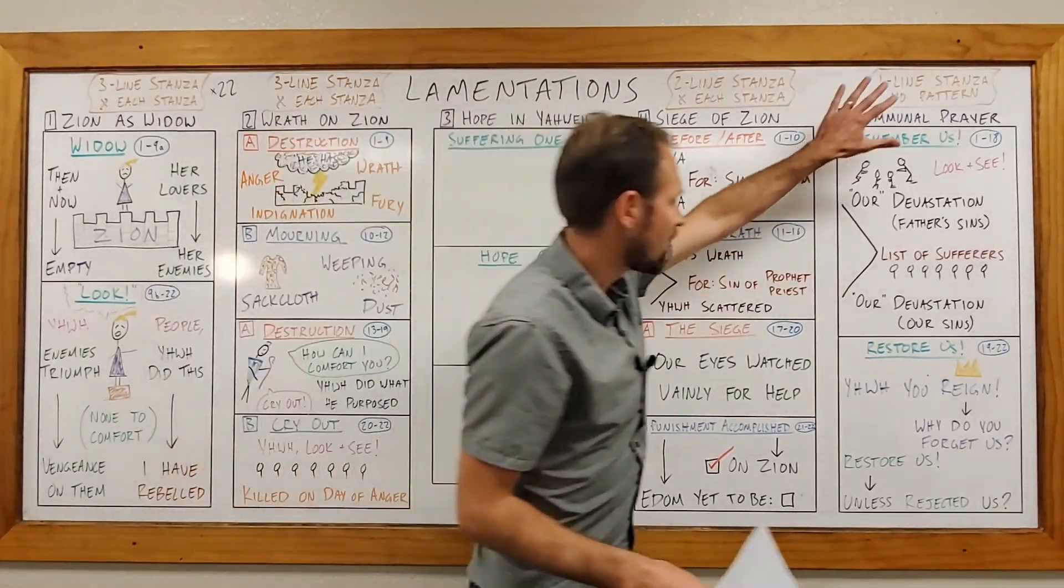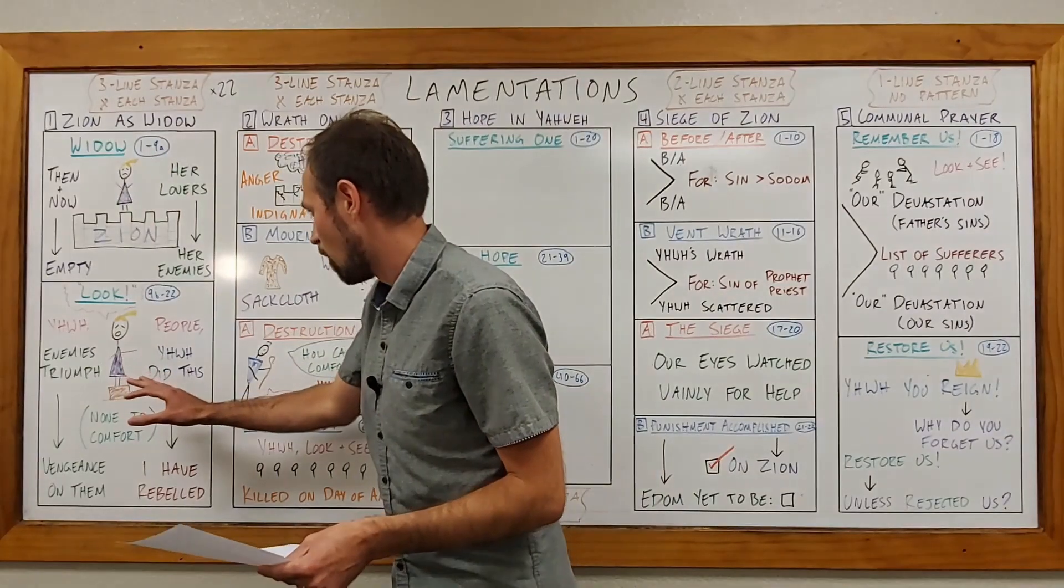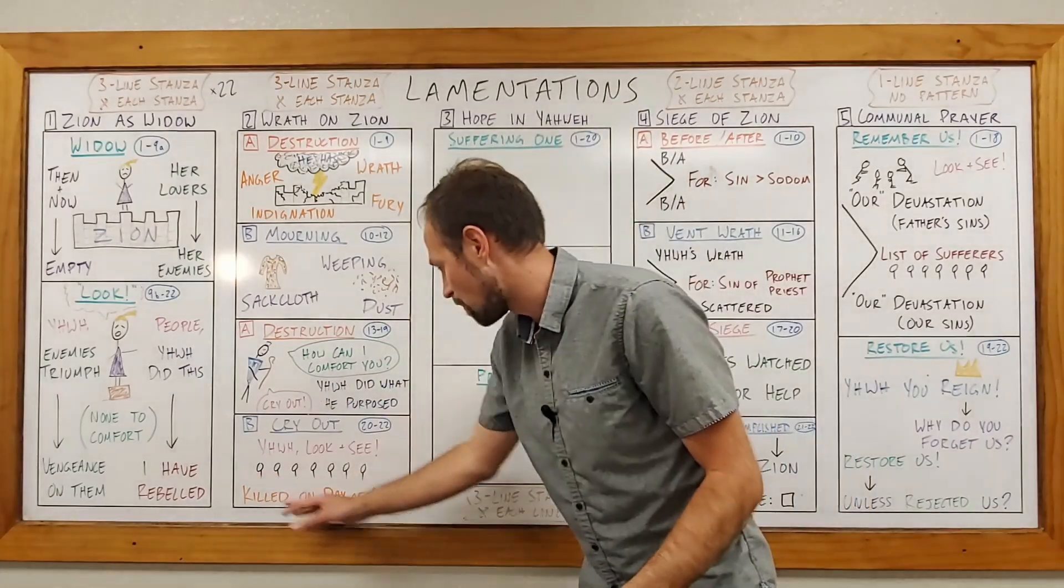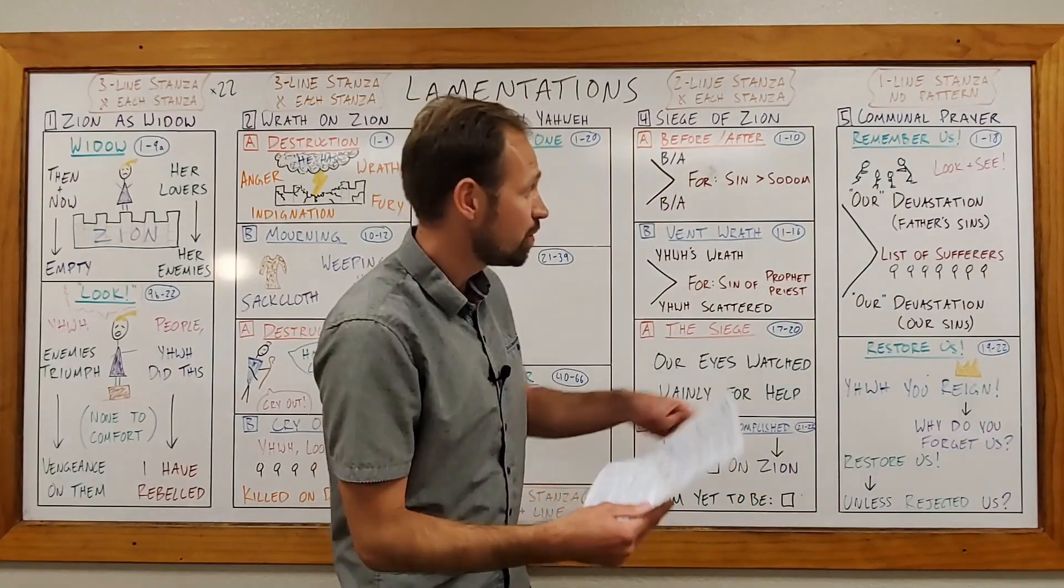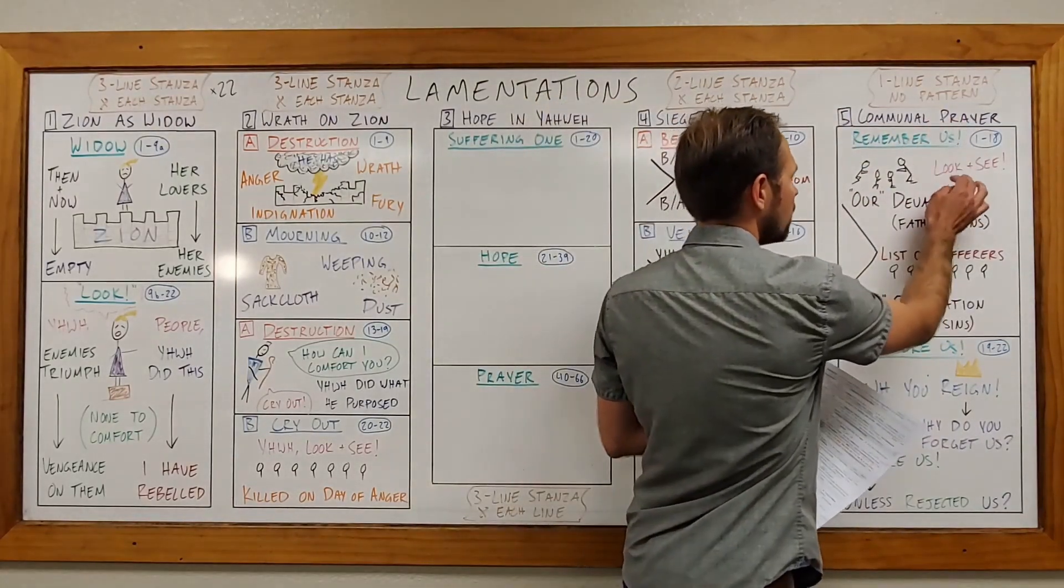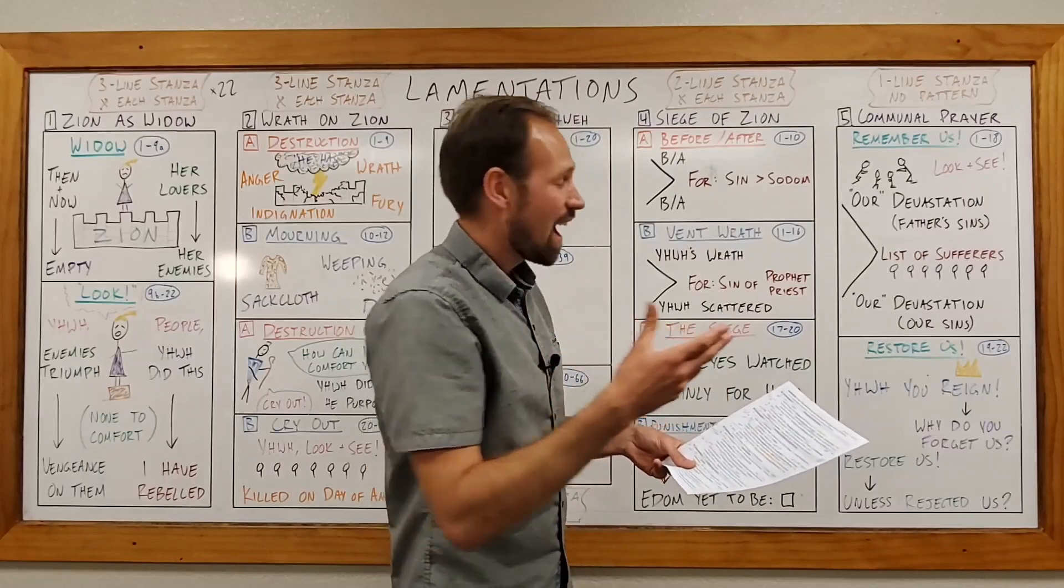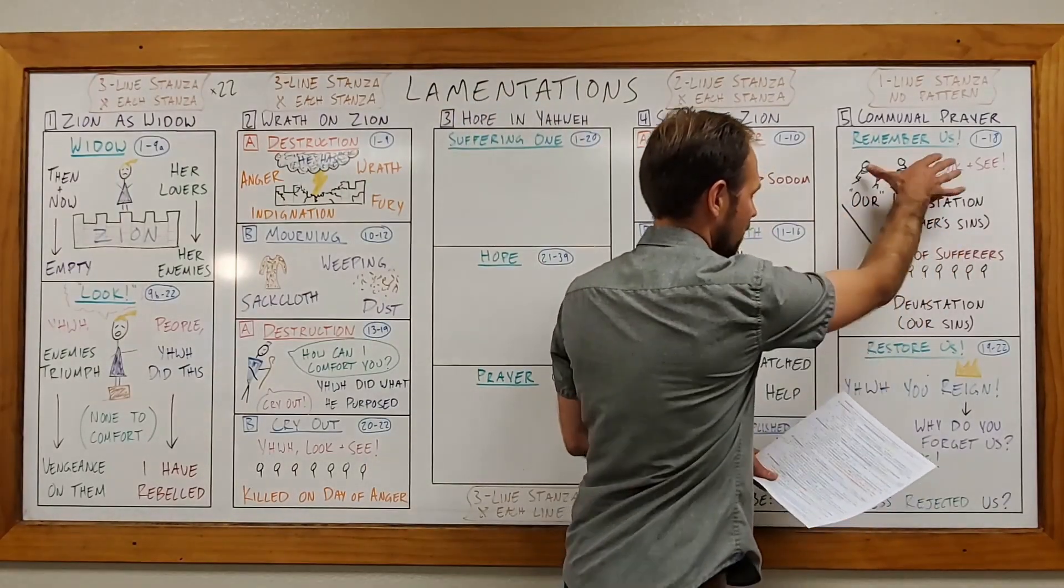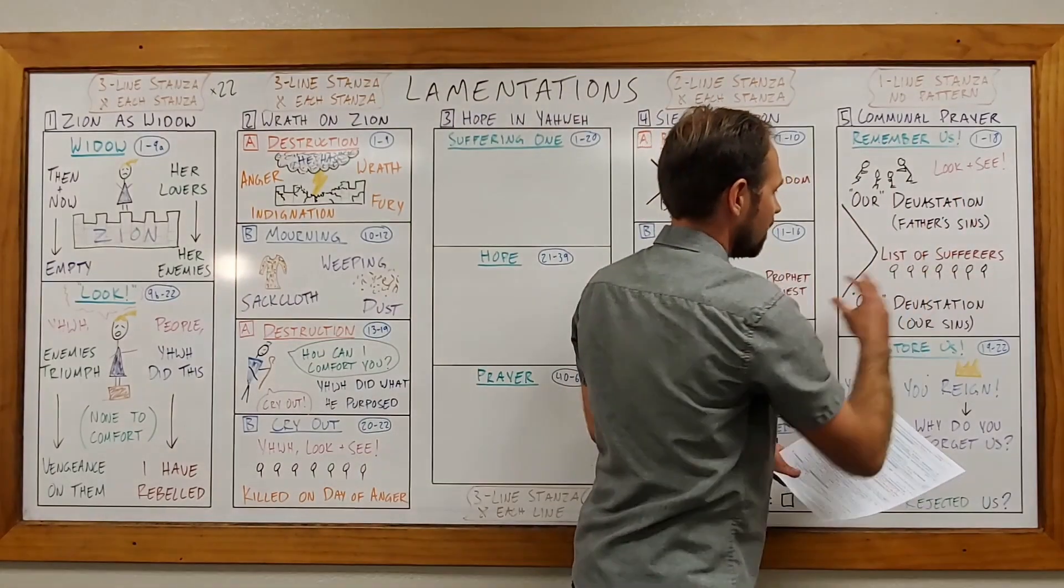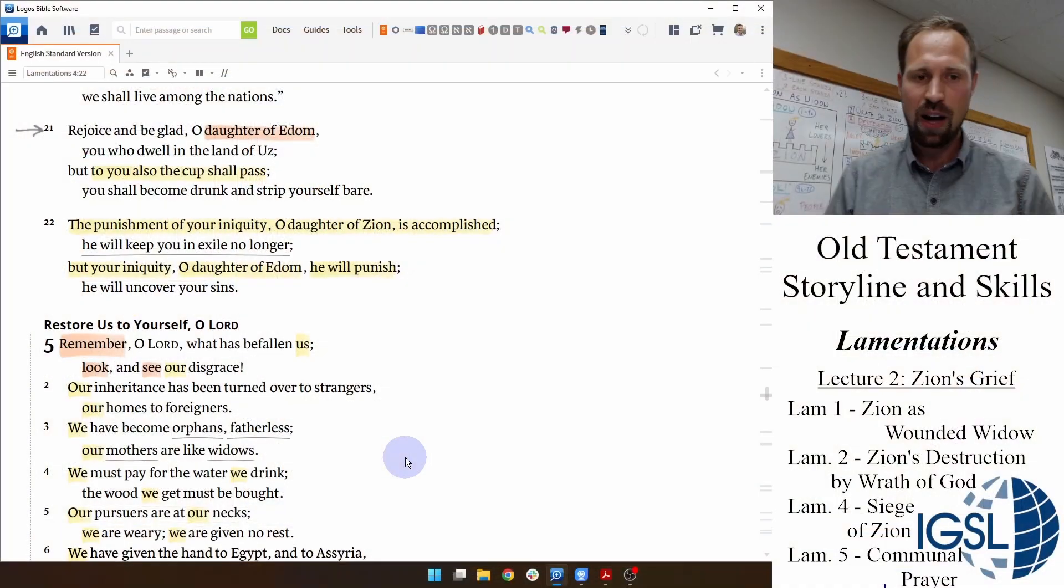Well, the final poem here in chapter 5 is one long prayer. And just like chapter 1, Lady Zion's poem, which begins with a call for Yahweh to look and see, and the poet's poem here in chapter 2, which says, Yahweh, look and see. So the communal prayer of the people of Zion, of Jerusalem, is also going to begin here with a call for Yahweh to look and see our disgrace, they say. And then it's going to have a very intricate chiasm, which follows that in verses 2 through 18.